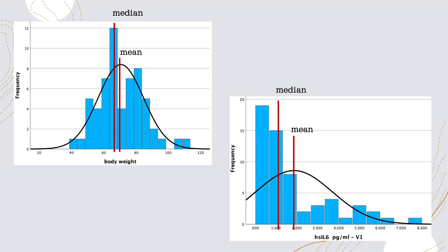Now I want to explain why the data distribution is important in choosing the measure of central tendency. We see our data distribution somewhat approximates a bell-shaped curve, and the mean and the median are placed pretty much close together.